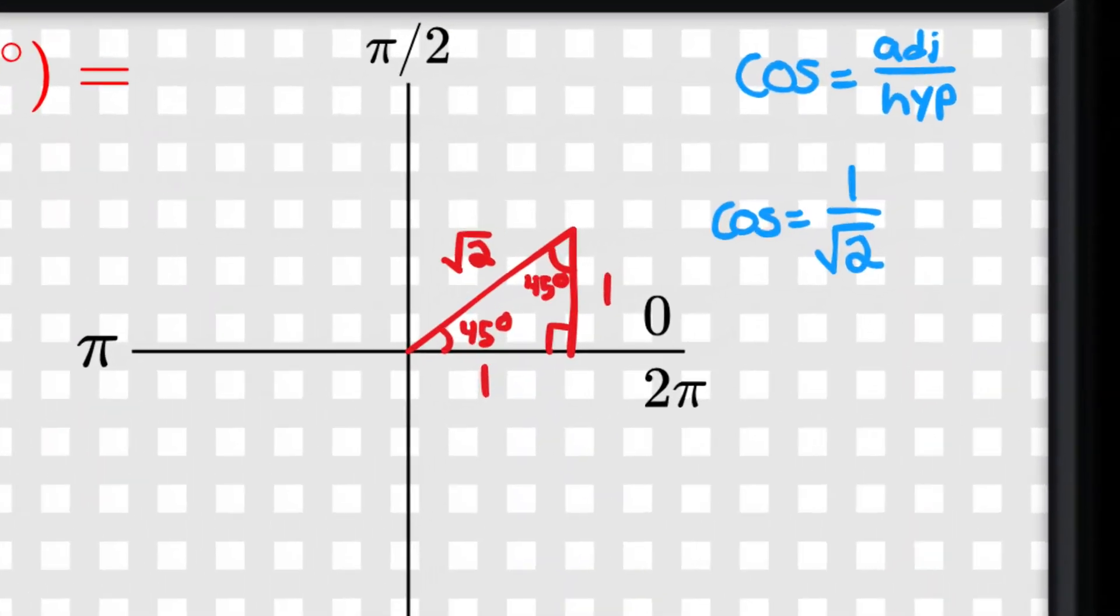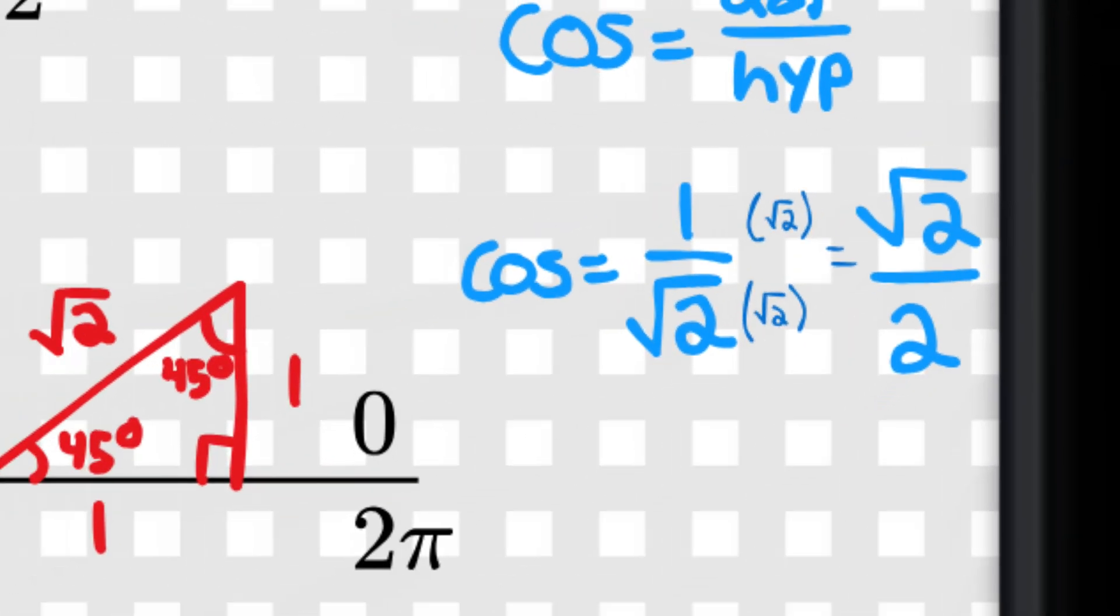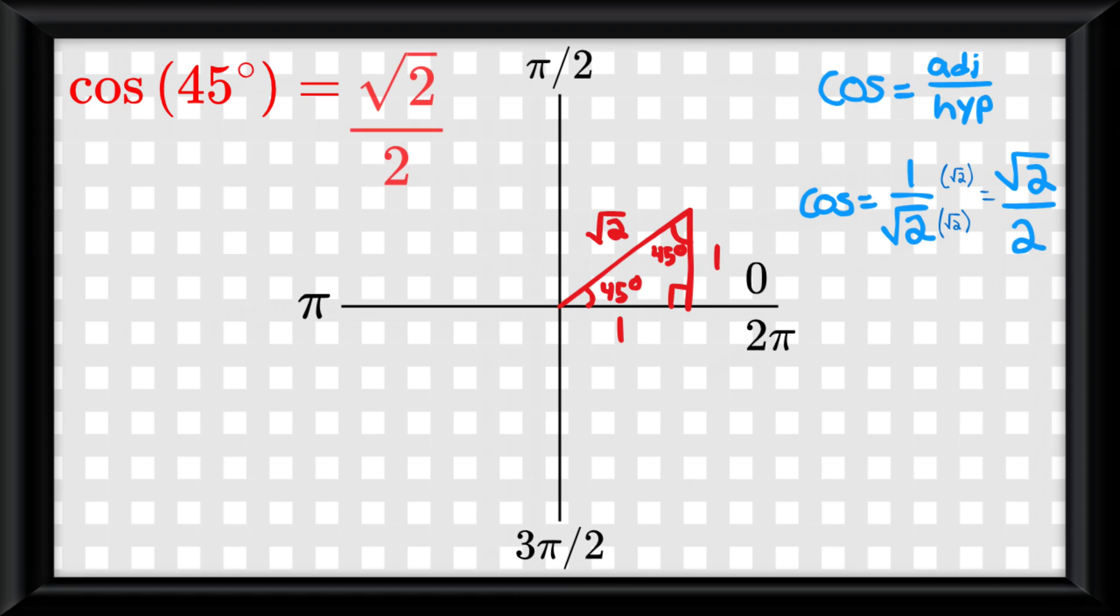so you must rationalize it by multiplying both the numerator and denominator by root 2. This gets us root 2 over 2 as our answer to cosine of 45 degrees, or pi over 4 radians.